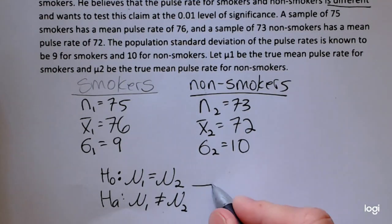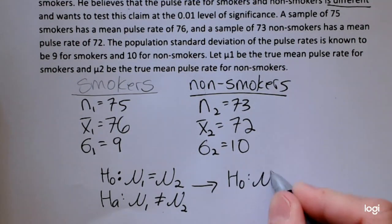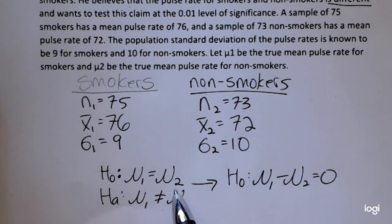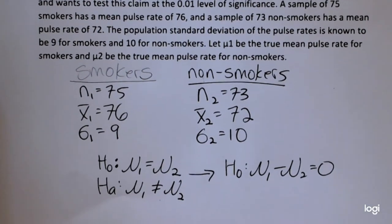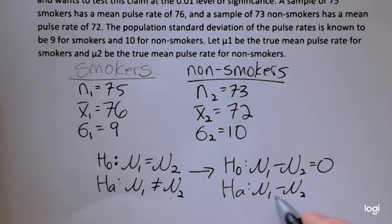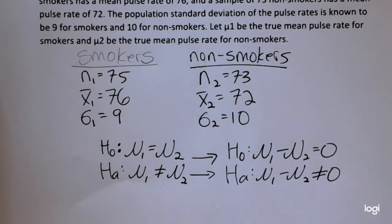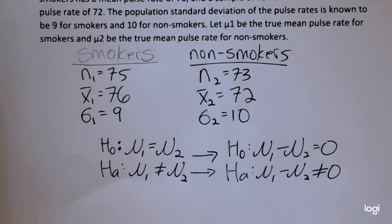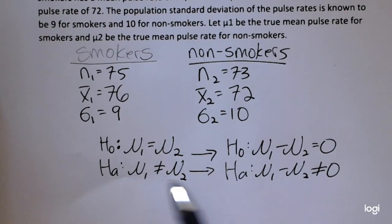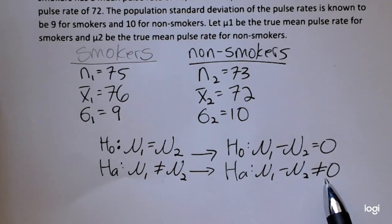Another way to express the null hypothesis is mu sub 1 minus mu sub 2 equals 0. Subtracting mu sub 2 from both sides, the alternative becomes: the difference is not equal to 0. These two formulations say the same thing — the alternative says they're not the same, or equivalently, their difference is not 0. Some homework programs use one version, some use the other — they're the same.